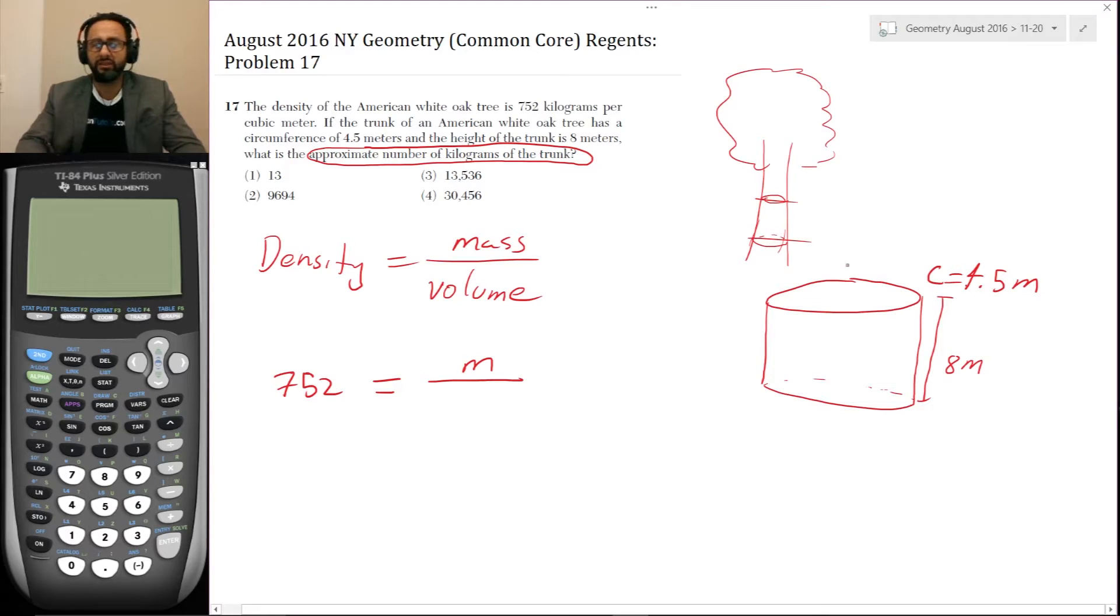We need to get the volume of the cylinder. Well, if the circumference is 4.5 meters, let's call this R. So C equals 2 pi R. So 4.5 equals 2 pi R divided by 2 pi. And we get R is equal to 4.5 over 2 pi.